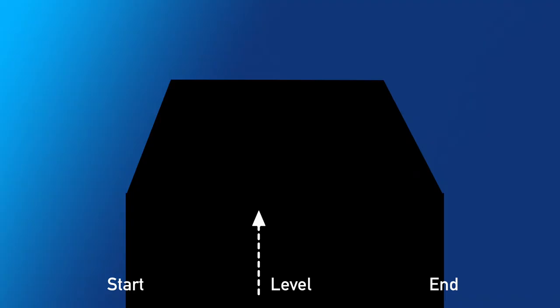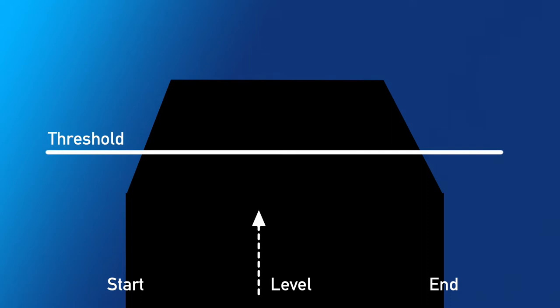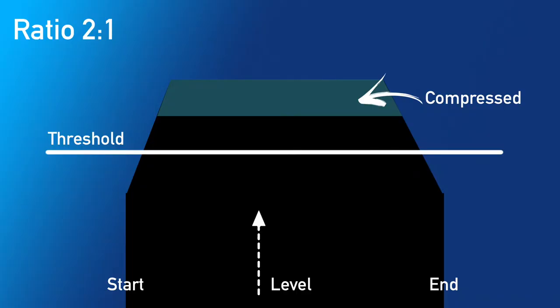How much compression is determined by ratio. Imagine that this block is audio — we have time from left to right and level vertically. Then we set the threshold where we want the compression to start. Let's say that we use a ratio of two — then all audio above the threshold will be halved in volume, 50%.